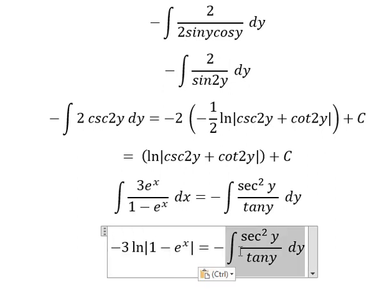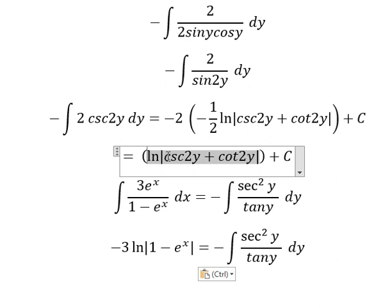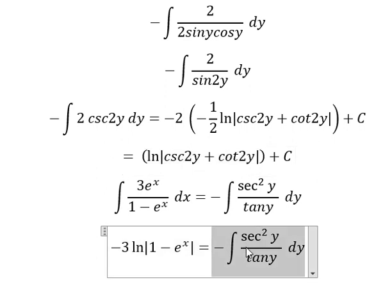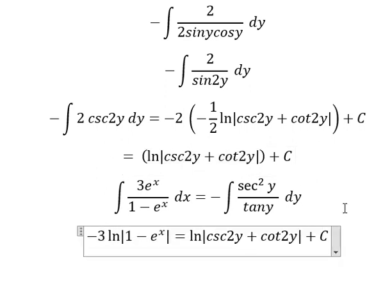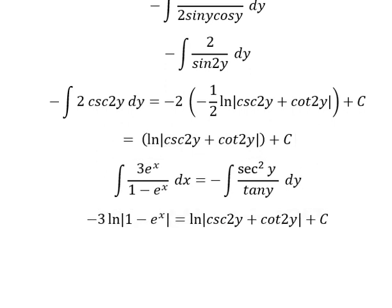Negative 3 ln of 1 minus e^x equals negative the integral of sec squared y over tan y dy. This is the end, thank you for watching.